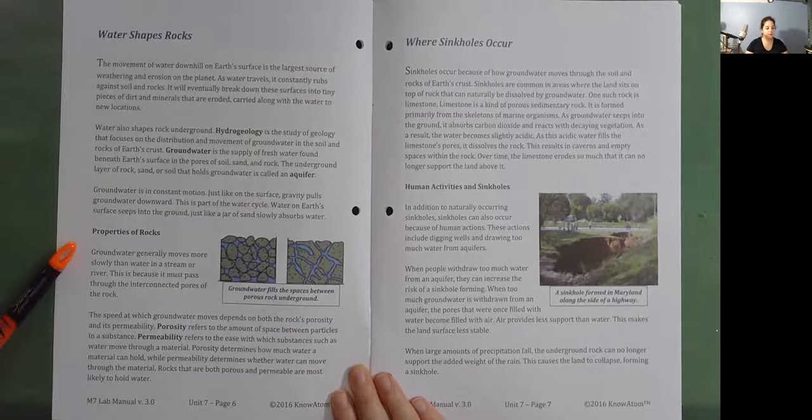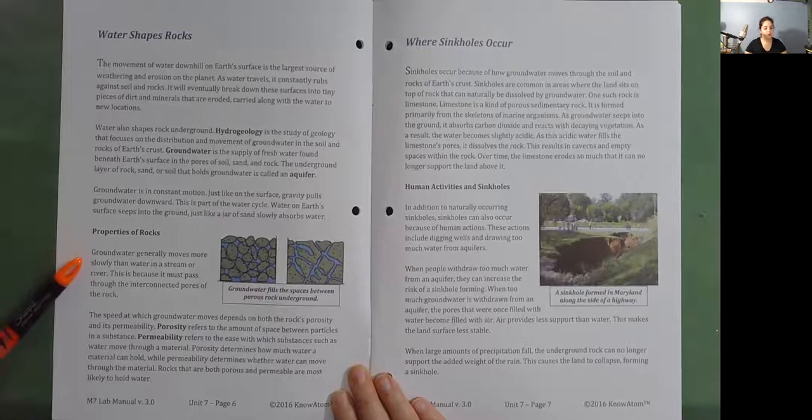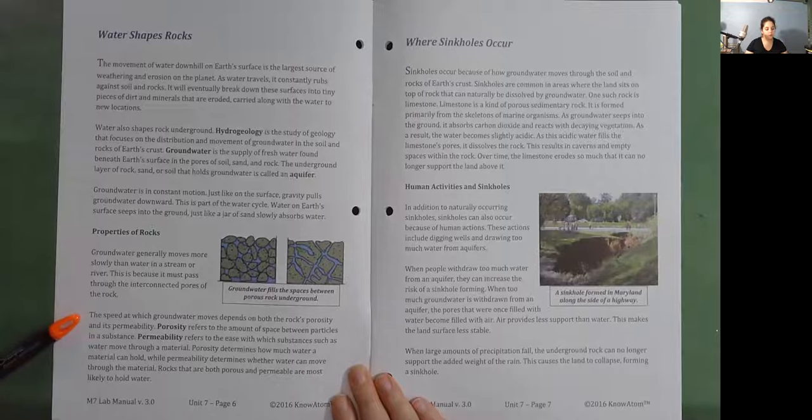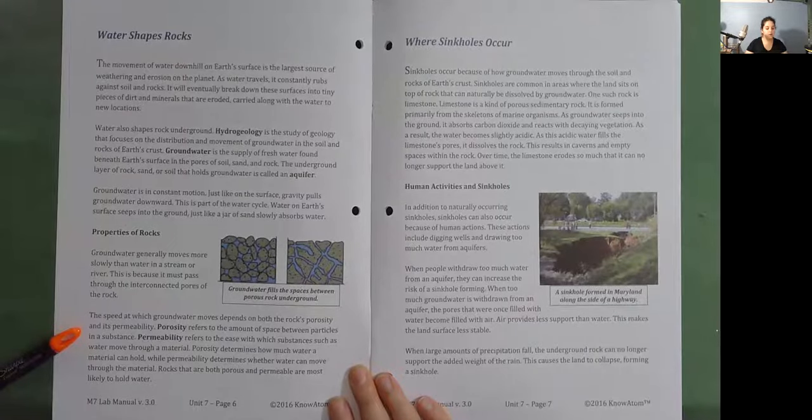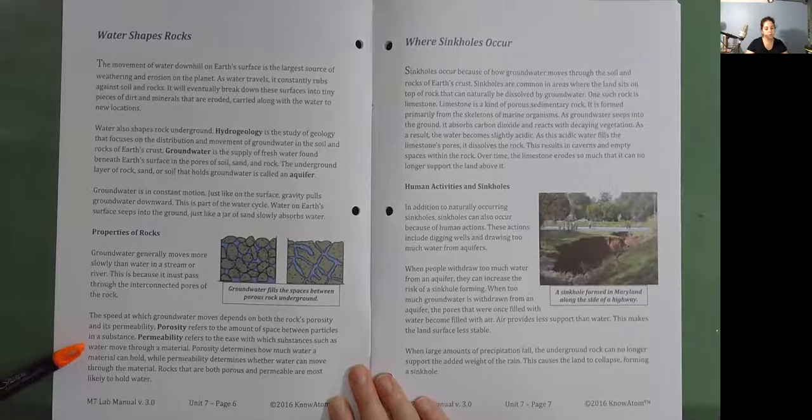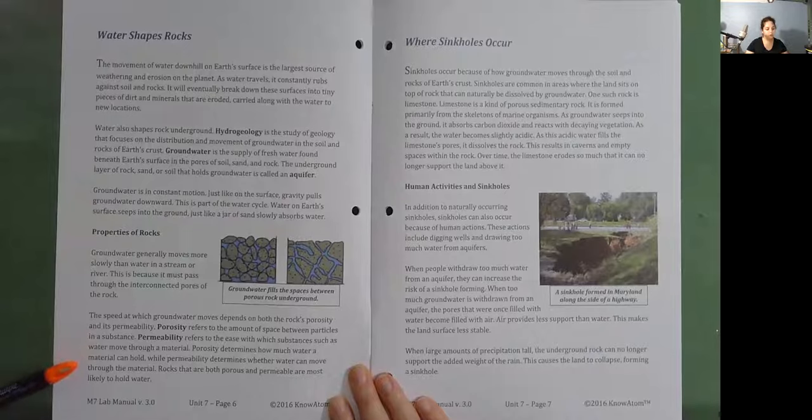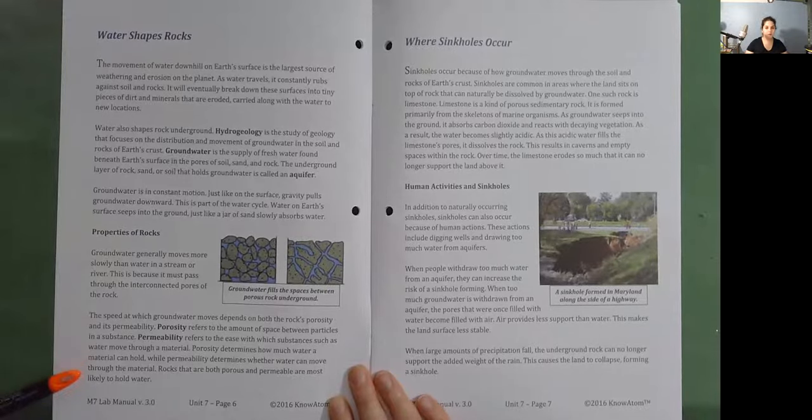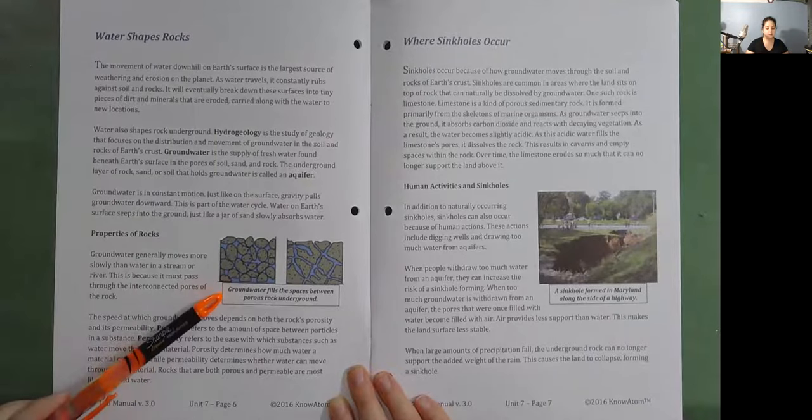Properties of rocks. Groundwater generally moves more slowly than water in a stream or a river. This is because it must pass through the interconnected pores of the rock. The speed at which groundwater moves depends on both the rock's porosity and its permeability. Porosity refers to the amount of space between particles in a substance. Permeability refers to the ease with which substances, such as water, move through a material. Porosity determines how much water a material can hold, while permeability determines whether water can move through the material. Rocks that are both porous and permeable are most likely to hold water.